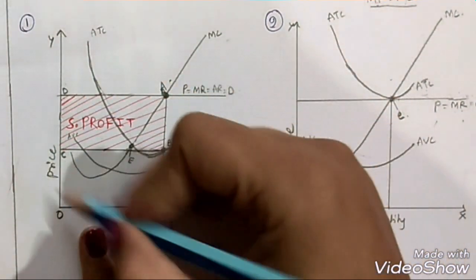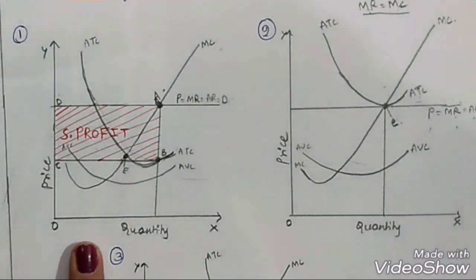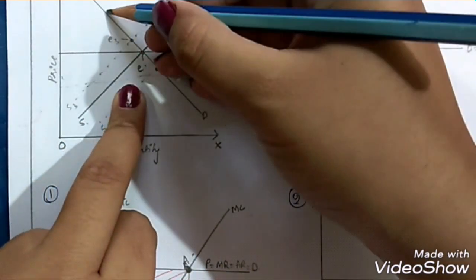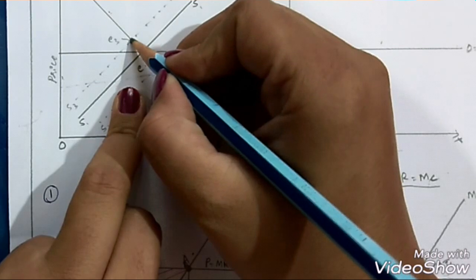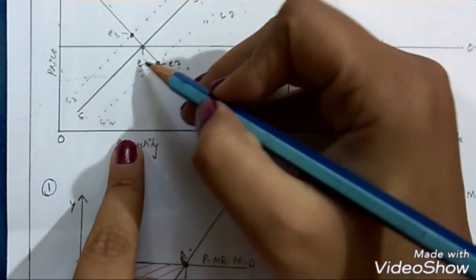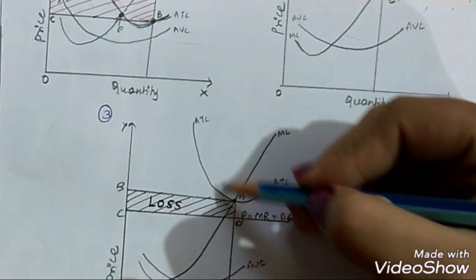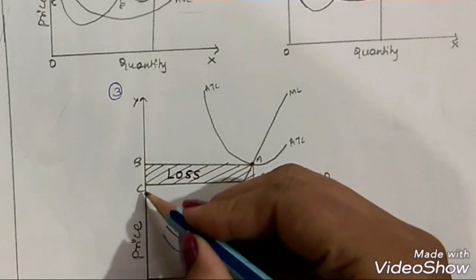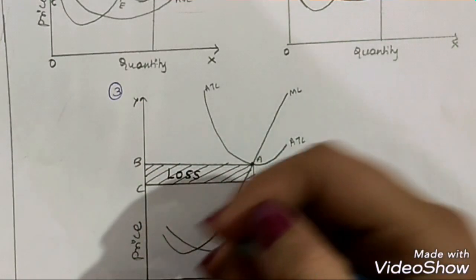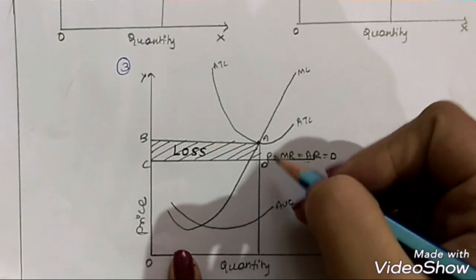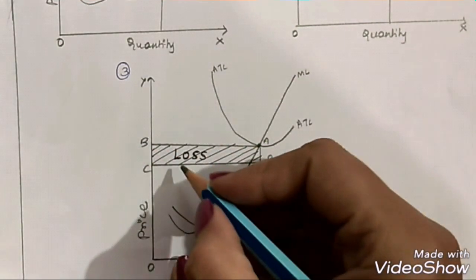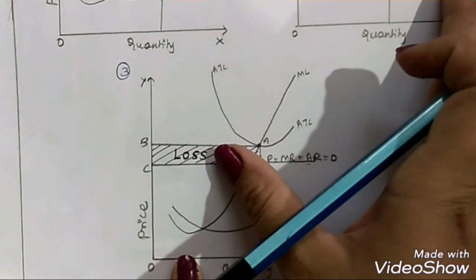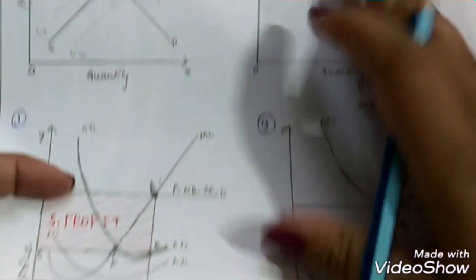Now assume that certain firms exit from this type of market. Then our supply curve will shift to the left — supply will reduce in the industry, we get a new equilibrium point, and prices will increase. Whenever supply reduces, our average total cost will increase. Whenever average total cost is more than the price, that area is called the loss or shutdown area. When firms are earning losses, they will not want to continue and will exit — that is why this is also called the shutdown area or shutdown point.